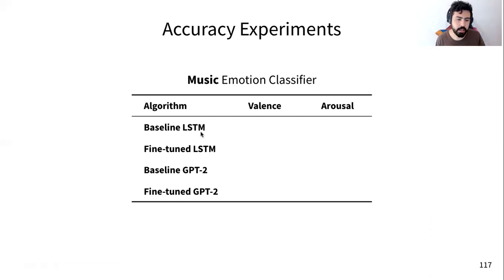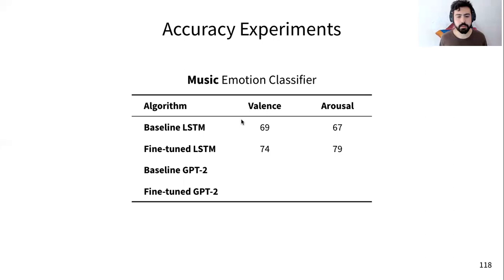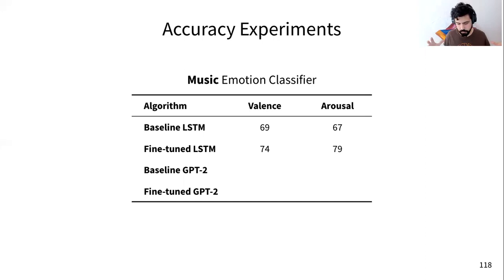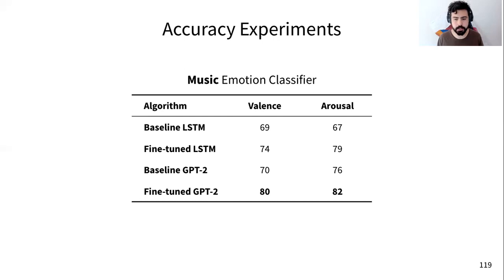For the music emotion classifier, we compared fine-tuned GPT-2 against fine-tuned LSTM and their baseline versions — where baseline means training without the pre-training step in a fully supervised manner. The fine-tuned LSTM outperformed the baseline LSTM, agreeing with results from the previous work that unlabeled data boosts model performance. The fine-tuned GPT-2 outperformed all other models.